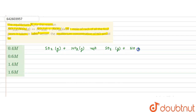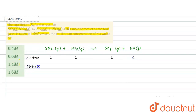At t = 0, initial moles were 1 for all gases. At equilibrium, if we say x moles of SO2 will dissociate, then x moles of NO2 will also dissociate, and 1 + x moles of SO3 and 1 + x moles of NO will be formed at equilibrium.